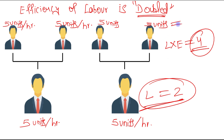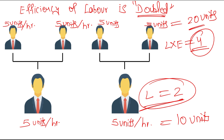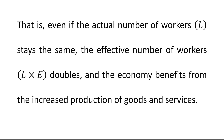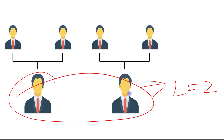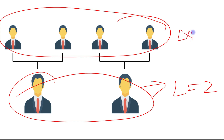The total output will also increase — earlier there were ten units, and now it has increased to twenty units. That is, even if the actual number of workers L stays the same, the effective number of workers L times E doubles, and the economy benefits from the increased production of goods and services. L equals two, but the number of effective workers has been doubled because the efficiency of labor has been increased.